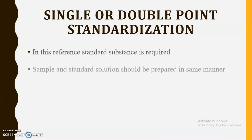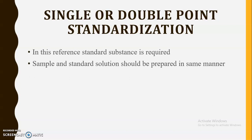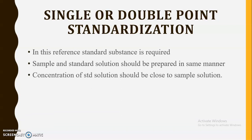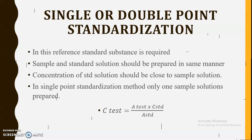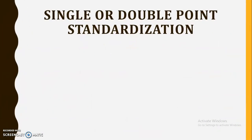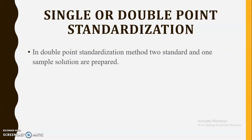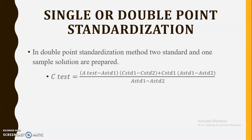The third method is single or double point standardization. A reference standard substance is required, and sample and standard solutions should be prepared in the same manner with concentrations close to each other. In single point standardization, only one standard solution is prepared, and concentration is determined as: C(test) = A(test) × C(standard) / A(standard). In double point standardization, two standards are used. These are the various applications of the UV visible spectrophotometer.